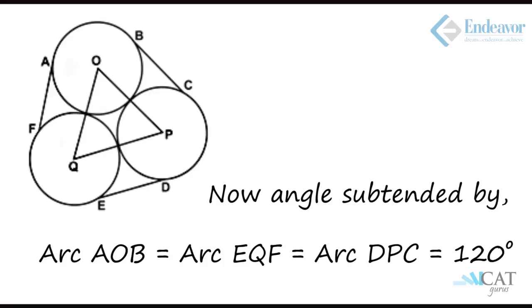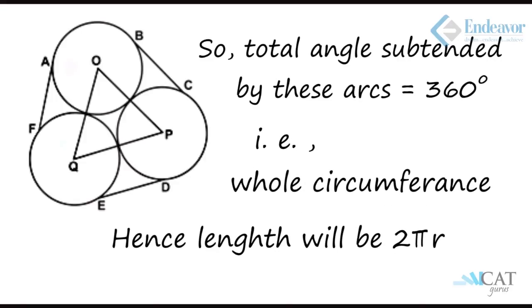There are three such curved rope portions. If we add all of them we will get a length equal to one full circumference of a circle, that is 2πr. So the total length of the rope encircling the three rods is 6r plus 2πr.